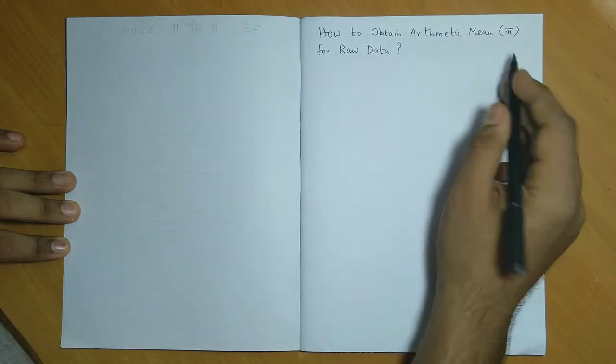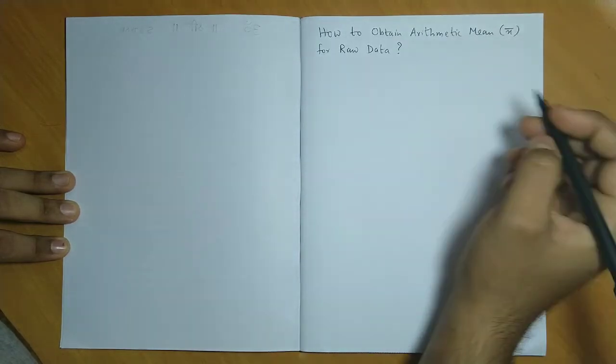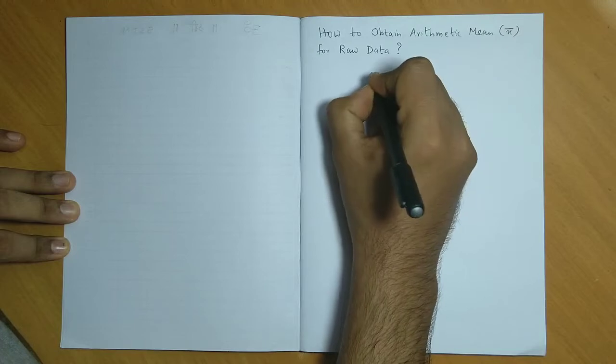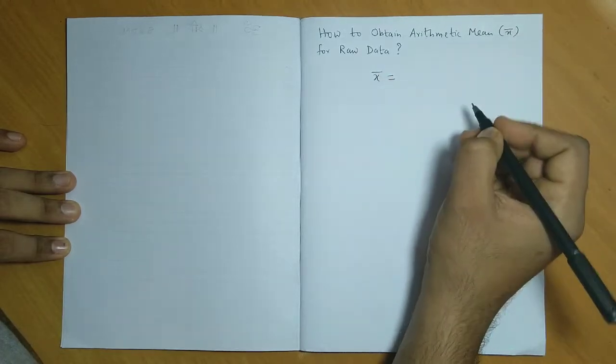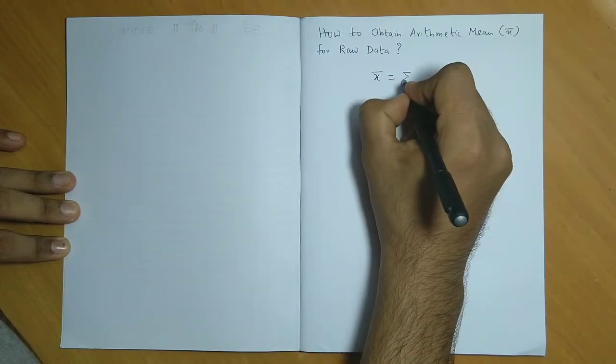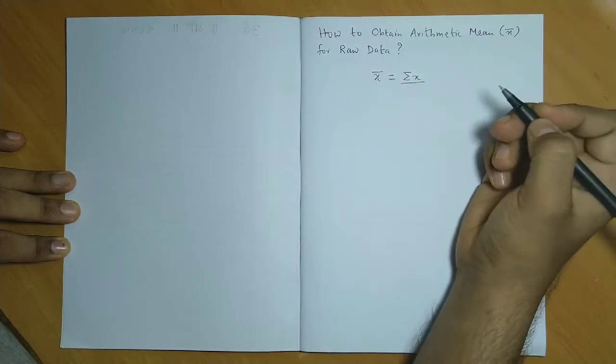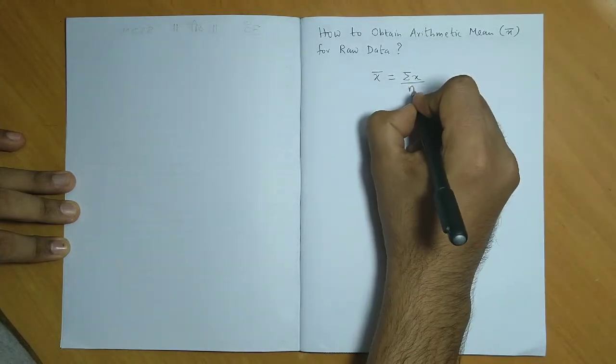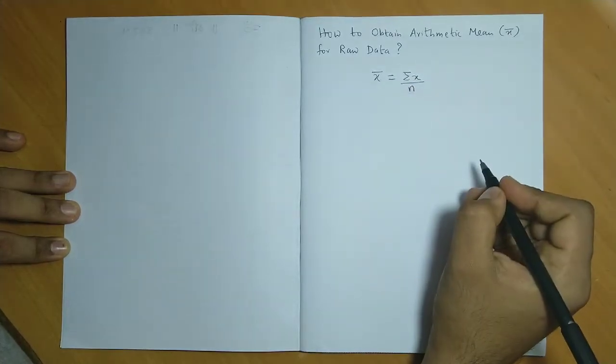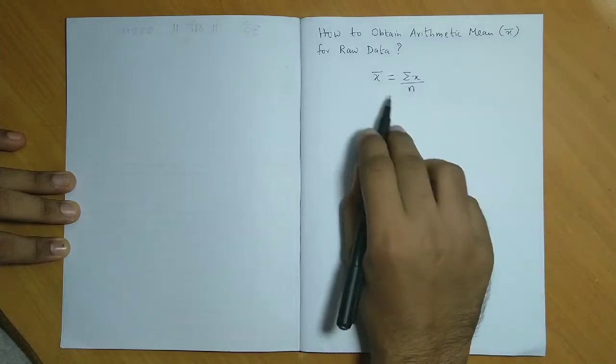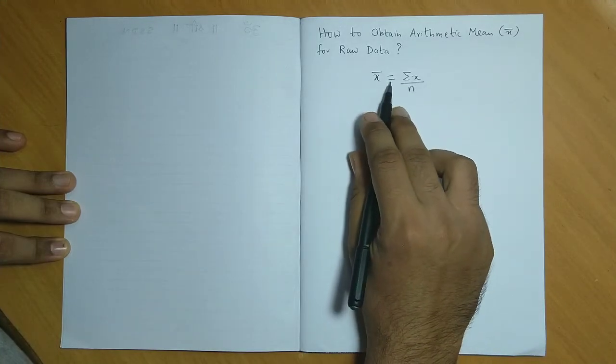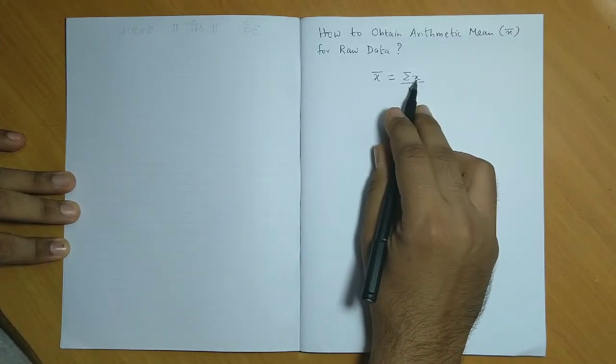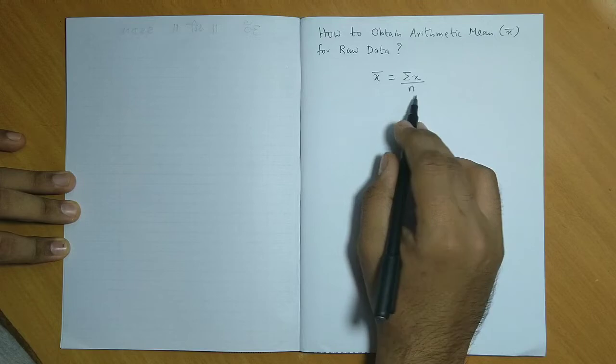The formula for arithmetic mean for raw data is given by x bar equals summation of x, that is sum of all the observations, upon n, that is the total number of observations. So remember this formula, x bar equals summation x upon n.